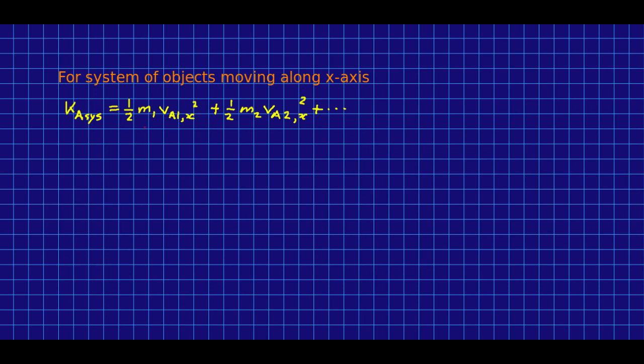So, here is the kinetic energy for a system of objects all moving along the x-axis. And we have an object one, and an object two, and so on. And we know how to convert this because the inertias don't change. And so, now we just have to transform each of the x components of velocity into the Z frame.